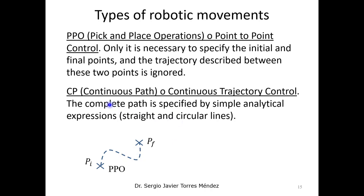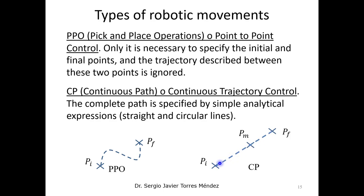For the second type of trajectory, we have continuous path control. Again, we start with an initial position and go to a final position, but in this case the end-effector needs to follow a specific trajectory — for example, a straight line, but it could be any kind of function that the robot needs to follow.